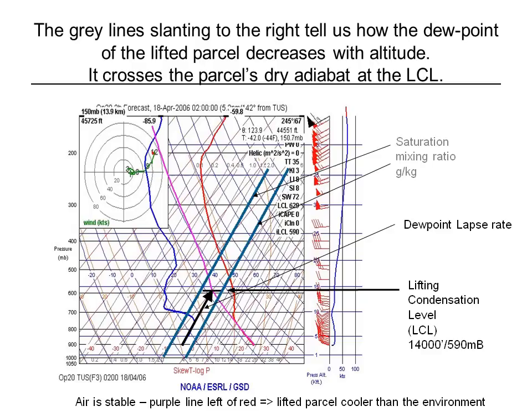The remaining gray lines on the chart, tilting to the right, are lines of constant mixing ratio — constant mixture of moisture to air — representing how the dew point changes as you lift the parcel. In this instance, the parcel starts with a temperature of 25°C and dew point of minus 4°C. The dew point follows the black arrow paralleling the gray curves; the temperature follows the purple curve along the dry adiabats. When they meet, the air is saturated, and from that point on the curve continues along the moist adiabat.